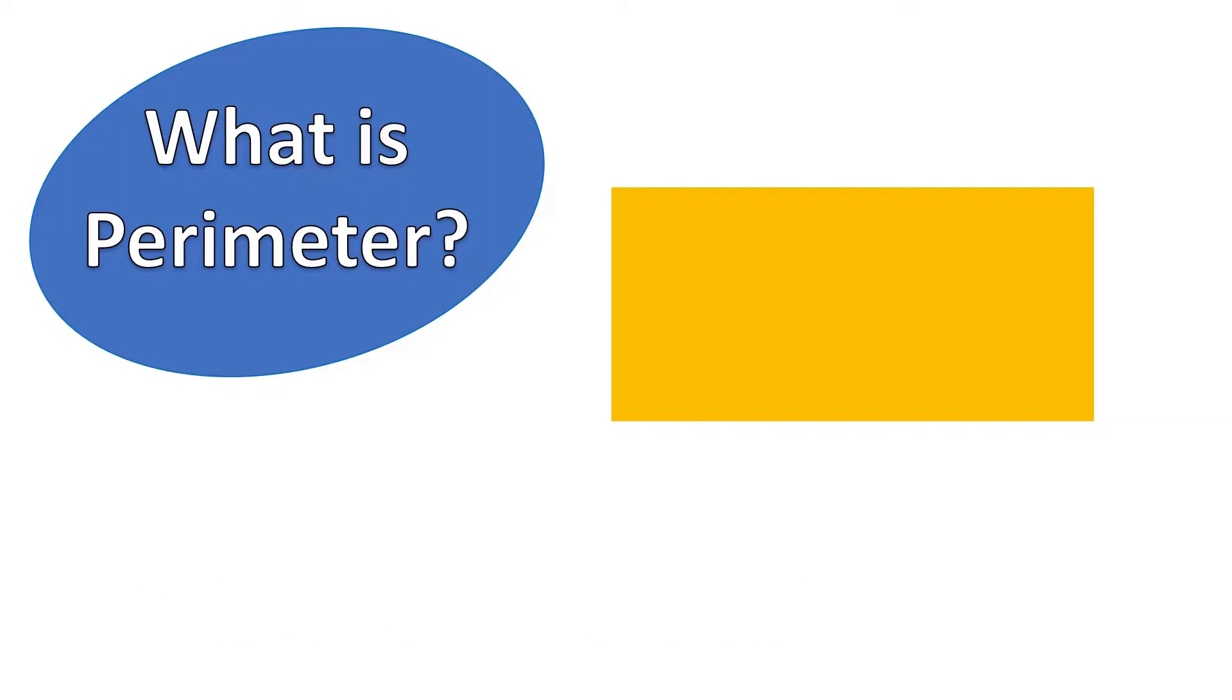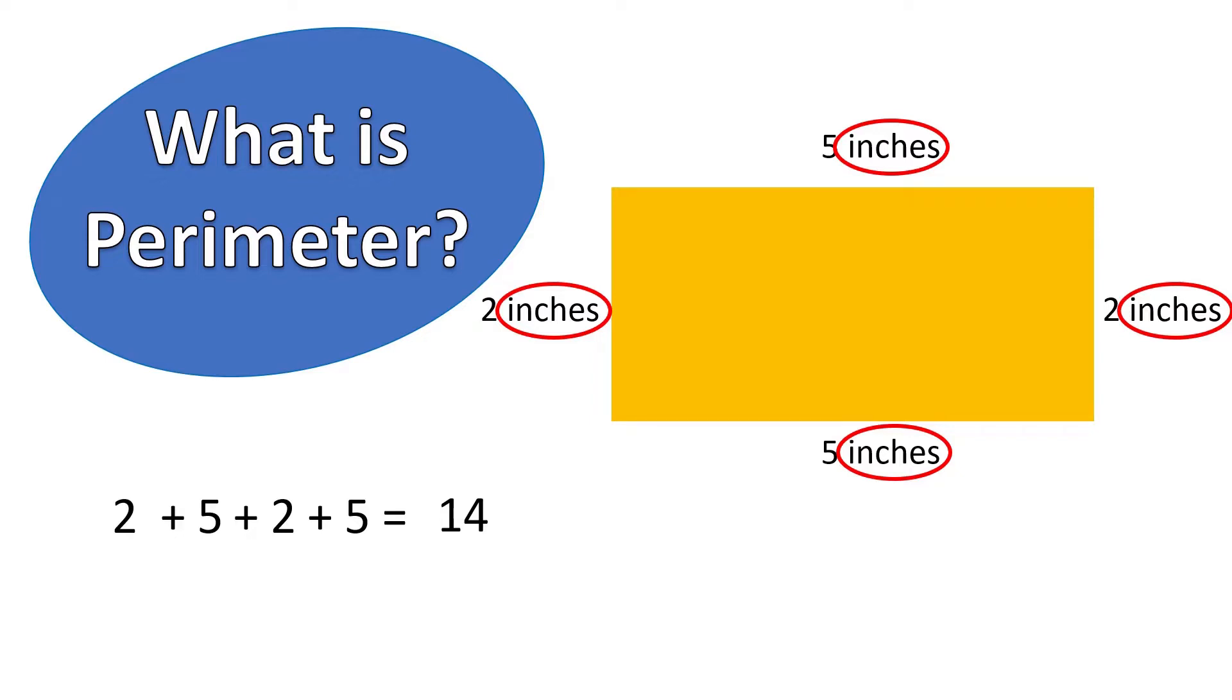So here our rectangle measures two inches, five inches, two inches, five inches. So we go two plus five plus two plus five. Now can you tell me what that equals? Brilliant. Yes, 14. And what's the important thing we need to remember in our answer? Yes, our unit of measurement that we are using. Here we have used inches. So our answer will read 14 inches. You guys are geniuses.